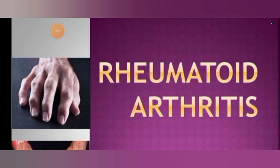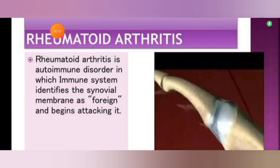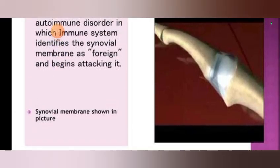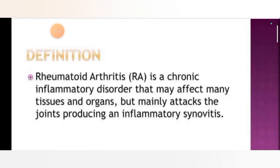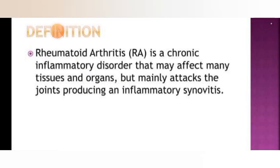Today I will discuss rheumatoid arthritis. Rheumatoid arthritis is an autoimmune disorder in which the immune system identifies the synovial membrane as foreign and begins attacking it. This picture shows the synovial membrane affected by rheumatoid arthritis.